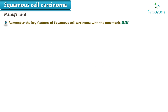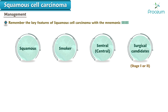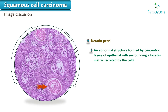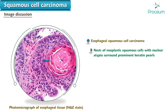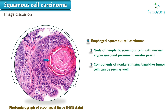Remember the key features of squamous cell carcinoma with the mnemonic 'squamous': smoker, central, and surgical candidate when presenting in stage 1 or 2. An abnormal structure formed by concentric layers of epithelial cells surrounding a keratin matrix — termed a keratin pearl — can be seen here. It is associated with well-differentiated squamous cell carcinoma. Nests of neoplastic squamous cells with nuclear atypia surround prominent keratin pearls. Nests of non-keratinizing basal cell tumor cells can be seen as well. This carcinoma is moderately differentiated and keratinizing.